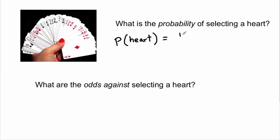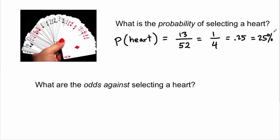As another example, if you take one card from a standard deck, what's the probability of selecting a heart? There are thirteen hearts in a standard deck out of fifty-two cards, so thirteen over fifty-two equals one quarter. One quarter is 0.25, which is twenty-five percent. So the probability of selecting a heart is one-fourth, 0.25, or twenty-five percent.